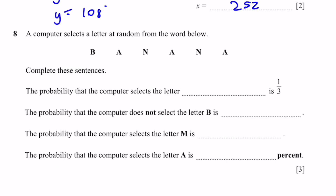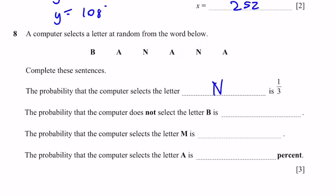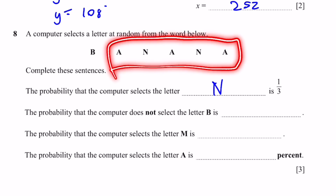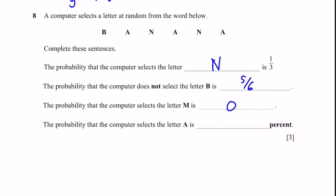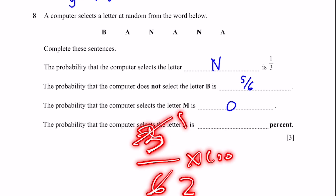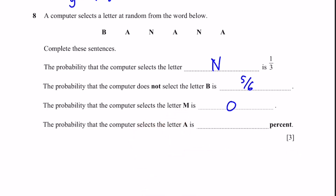Question 8. A computer selects a letter at random from the word 'BANANA'. The total is 6 letters. The probability of selecting the letter N is 1/3, because N appears 2 times out of 6. The probability of not selecting B is 5/6, since B appears only once. The probability of selecting M is 0, because M is not in the word. The probability of selecting A is 50%, since A appears 3 times out of 6, and 3/6 equals 1/2, which is 50%.